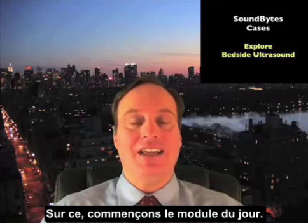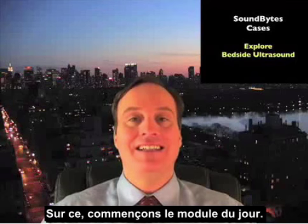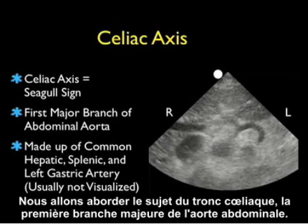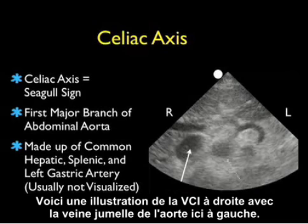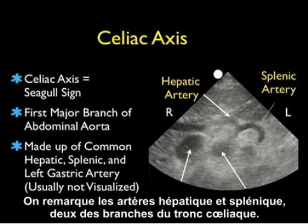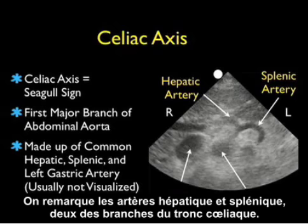Without further delay, let's get right into today's module. We'll discuss the celiac axis, which is the very first major branch of the abdominal aorta. In the pictorial, we see the IVC to the right of the aorta shown to the left, and the hepatic artery and splenic arteries — the major branches of the celiac axis.